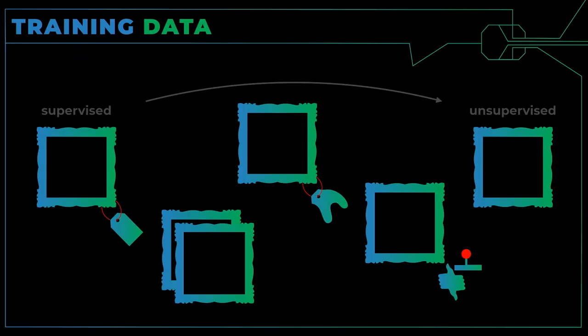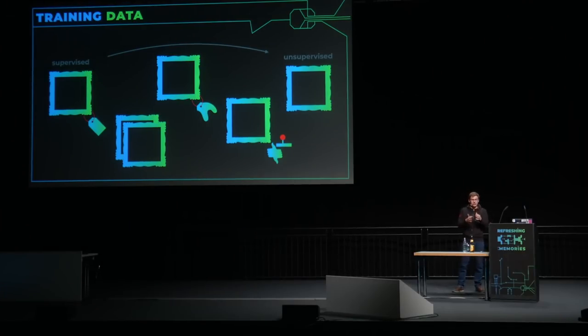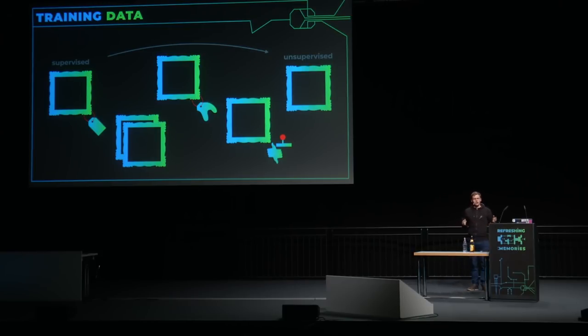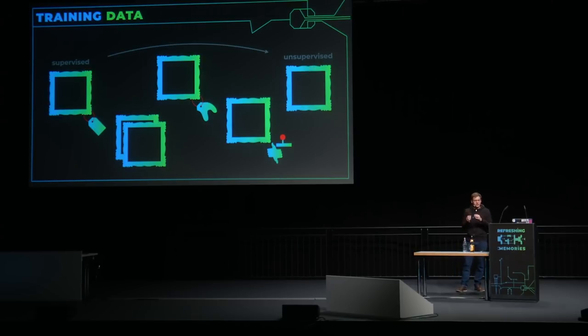Und das ist ein sehr wichtiger Punkt: wir brauchen sehr viel Trainingsdaten. Je komplizierter unser Trainingsmodell oder Prozess wird, desto mehr Daten benötigen wir. Im einfachen Fall, wo wir einen beobachteten Lernprozess haben — also wo wir die Daten jeweils mit den Output-Daten haben — ist das einfach. Aber es gibt auch den komplizierteren Fall, wo wir zwischen Pferden und Zebras transformieren wollten, ohne einen solchen Fall zu haben.